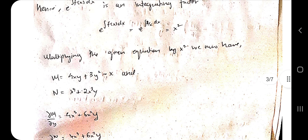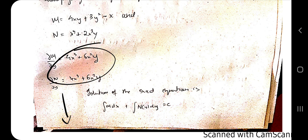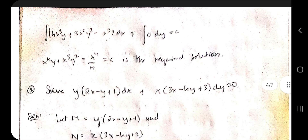So x-squared is the integrating factor. Multiply M by x-squared and N by x-squared to get two new equations. Then compute del M by del y and del N by del x again — this time they will match, confirming it is now exact. Carry out the rest of the solution using the same formula as in the previous exact differential equation problem to get the final answer.